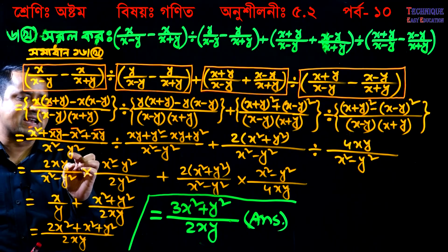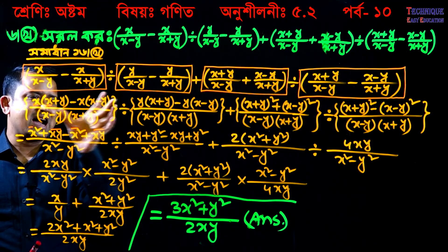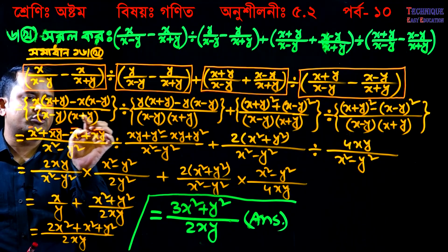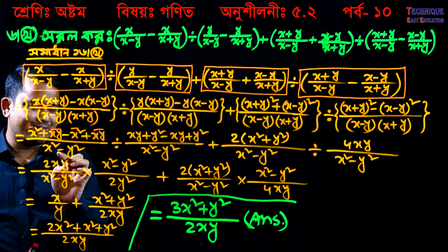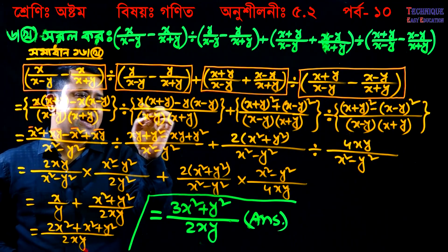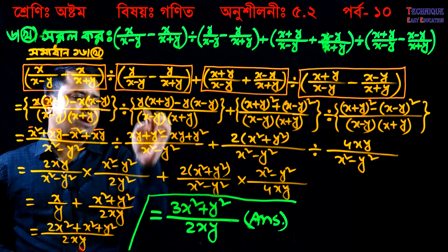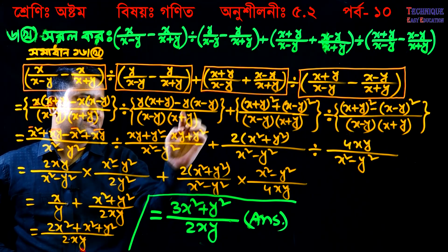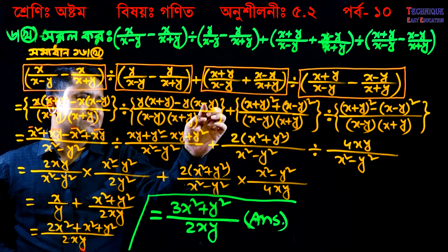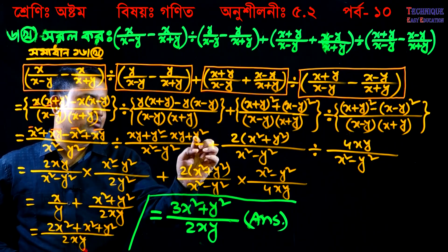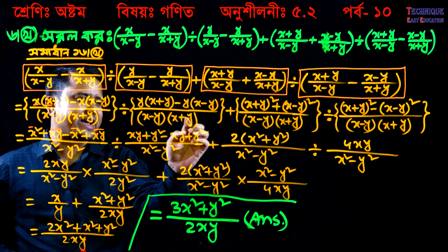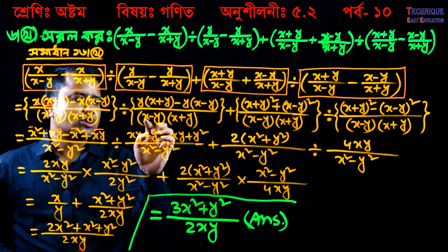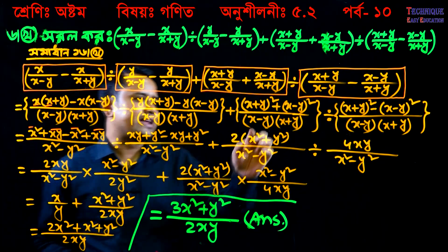We have a bracket here and we have A plus B into A minus B, plus A squared minus B squared. X minus Y into X plus Y, plus A minus B squared minus A minus B into A plus B.